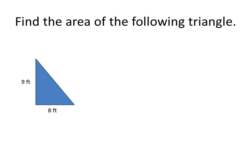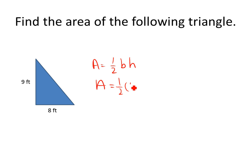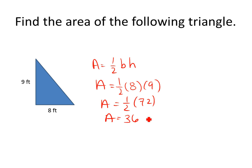Now let's find the area of the following triangle. The area formula for a triangle is one-half base times height. So, one-half times the base, which is 8, times the height, which is 9. Half of 72 is equal to 36, so the area is 36 feet squared. For area problems, we always square the units.